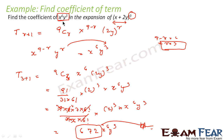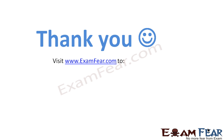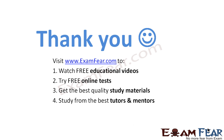Let me repeat what I have done. We were supposed to find the coefficient of x^6 · y^3 in the expansion. We found the general term T(r+1), compared x^(9−r) and y^r with x^6 and y^3, got r = 3, meaning we are looking at the fourth term T4. Solving this gave us 672 as the coefficient. Visit examfear.com to watch free educational videos, try free online tests, get the best quality study material, and study from the best tutors and mentors. Thanks once again.